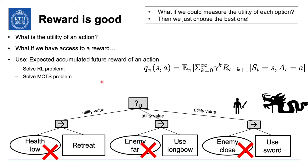Alternatively, we can solve a Monte Carlo tree search problem starting from each action here. Monte Carlo tree search is related to reinforcement learning, and it's another option to get utility for the first pick of actions.